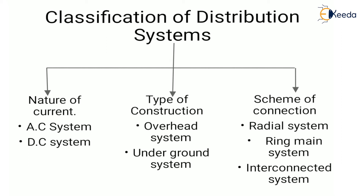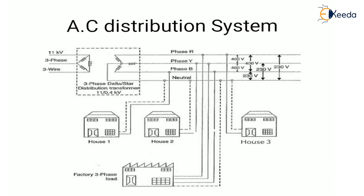Next is the classification of distribution systems. A distribution system is classified by: nature of current — AC system or DC system; type of construction — overhead system and underground system; and scheme of connection — radial system, ring main system, and interconnected system.